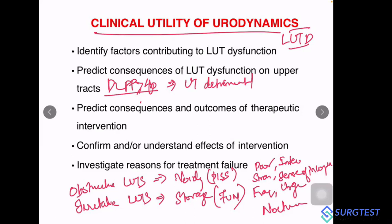The next point is to confirm and understand the effects of intervention. For example, if you have done an augmentation cystoplasty for a neurogenic bladder patient — you measured parameters like compliance and DLPP before, then augmented the patient — after surgery you need to understand whether the surgery really helped. As a means of follow-up, you can do a urodynamic evaluation to understand the effects of your augmentation cystoplasty.